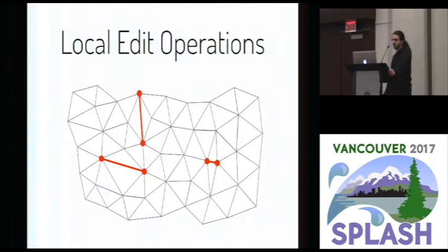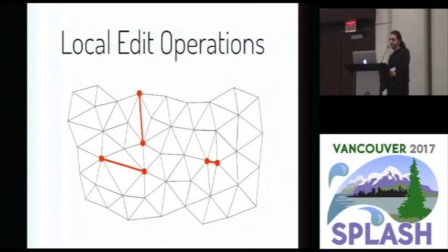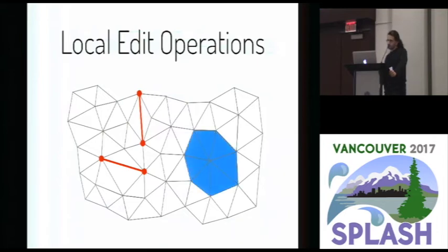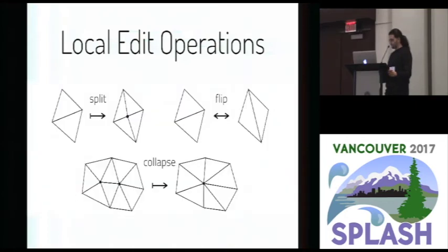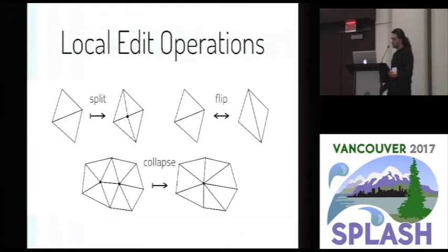The triangle mesh is an example of a structured graph being edited locally. The adaptive remeshing is performed by repeatedly applying local edits at different points of the mesh. For example, we might collapse an edge to reduce detail, split an edge to increase detail, or flip the edge to change its direction. What all of these operations have in common is that they can arbitrarily modify objects and connections, but only within a bounded number of hops away from their arguments.